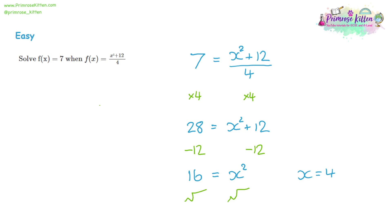So we've done two questions which are just substitutions, and now this one it's just solving an equation — it's just that the way it's written is a little bit different. Spot that both f of x values are equal, so we can make them equal to each other and solve.